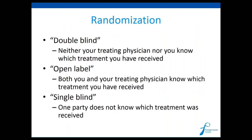There are different kinds of randomization you might hear mentioned. A double-blind randomized trial is one where neither you nor your treating physician know which treatment you've received. An open-label study is where both you and the physician know which medication you are receiving. A single-blind trial is where one party — more often the patient — does not know which treatment is being received. These are less common.